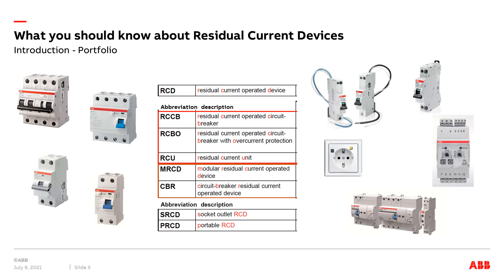Residual current devices are available in various forms for many different applications. The classic RCCBs protect against earth faults and are usually combined with several overload protection devices like MCBs. RCBOs combine these functions in one device and are used for a single circuit. MRDCs are usually used to monitor earth faults; however, with a contact, they can also trip a protection device like a circuit breaker. These devices are not suitable for people protection. Electronic RCDs, or ERCDs, depend on a supply voltage. The advantage is that they can be built in a smaller housing, but in many countries voltage-independent RCDs must be installed.